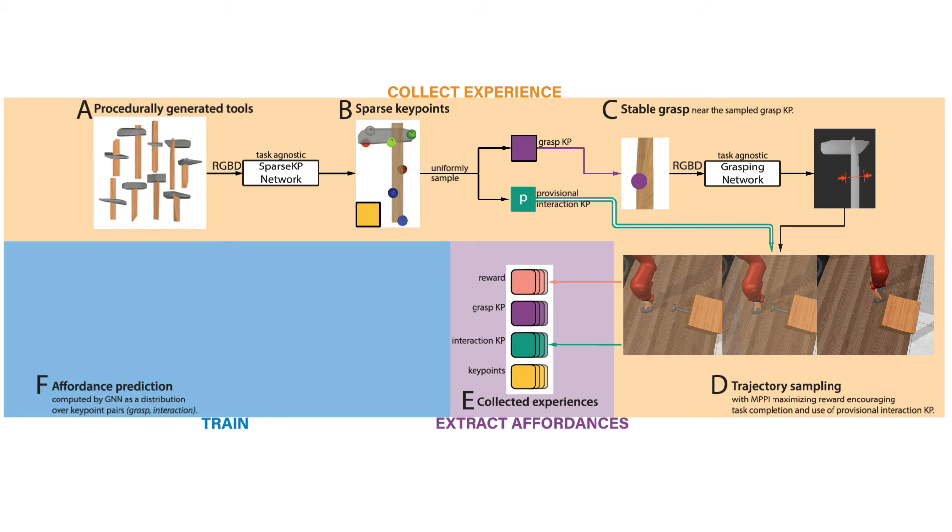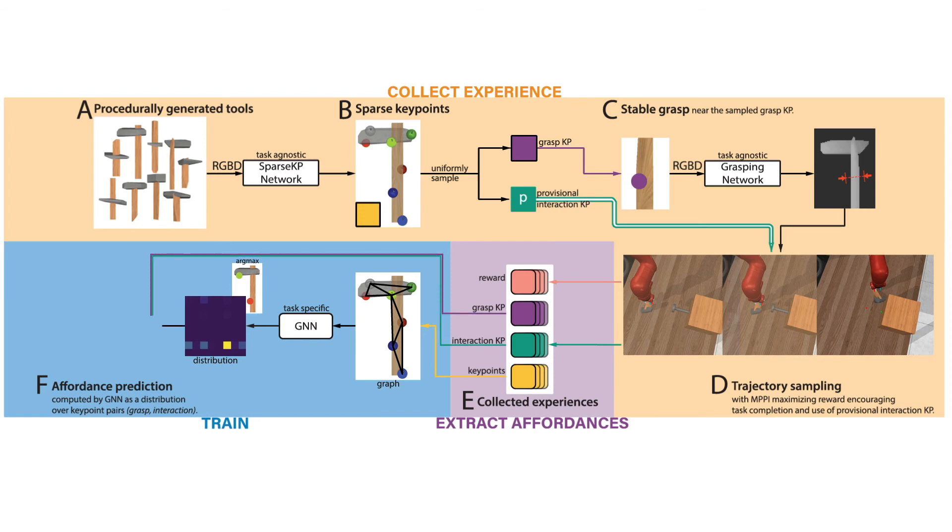Finally, to train affordance prediction, we sample a training example and build a graph out of its sparse key points. This graph is fed to a task-specific GNN, which predicts a distribution over pairs of key point indices. That is, the joint distribution over grasp and interaction key points. Finally, we update the GNN weights using REINFORCE with the reward from the sampled trajectory.